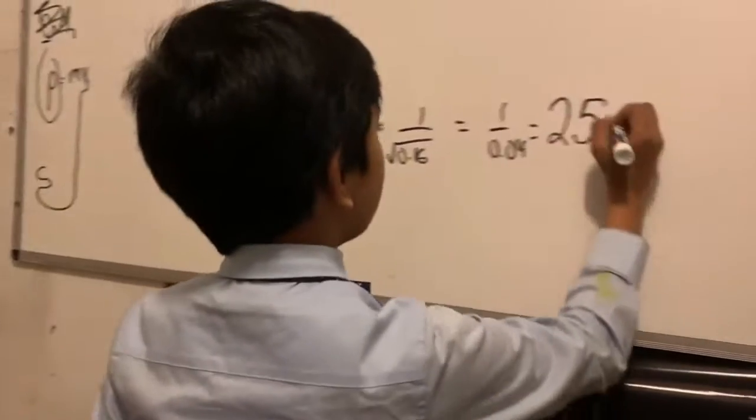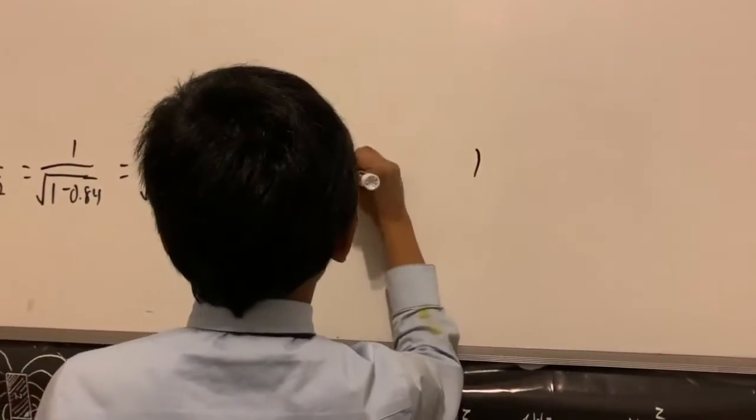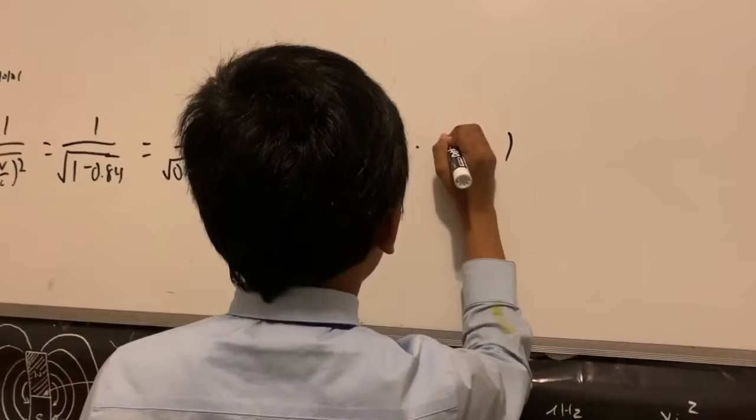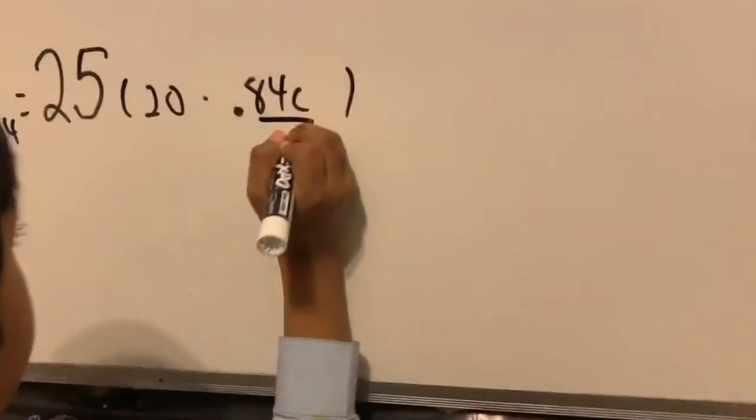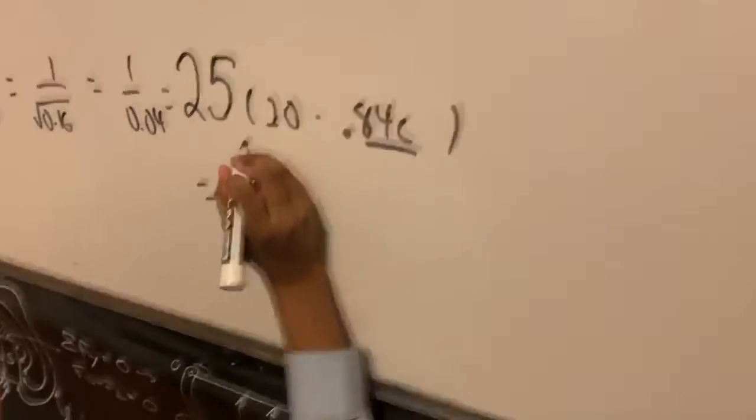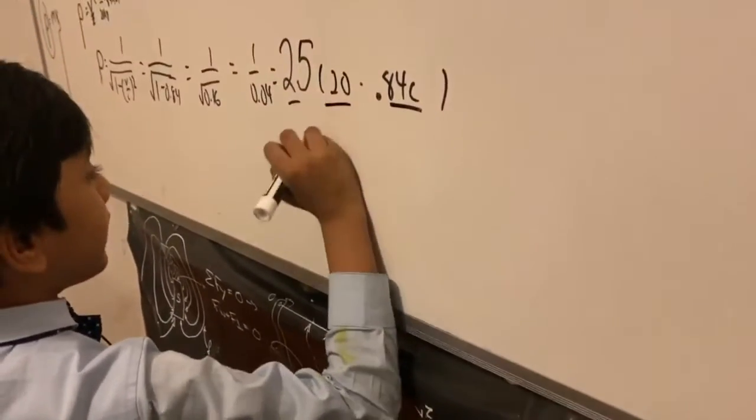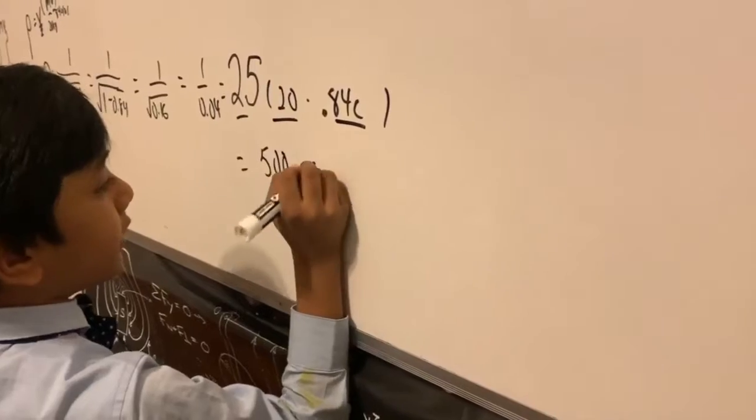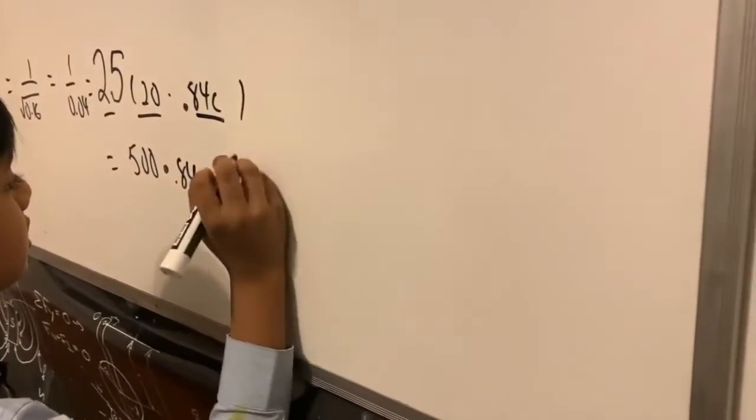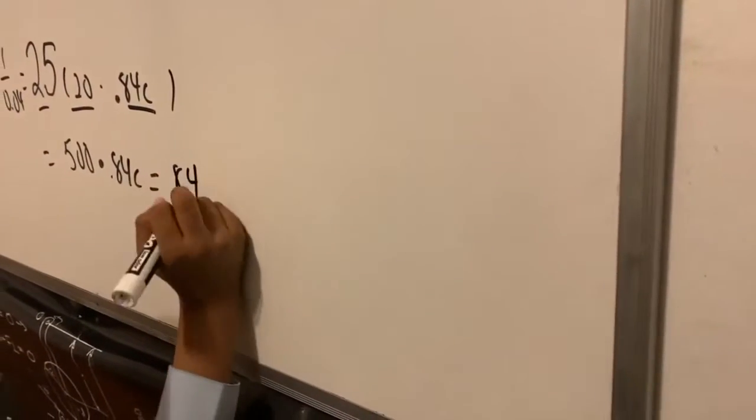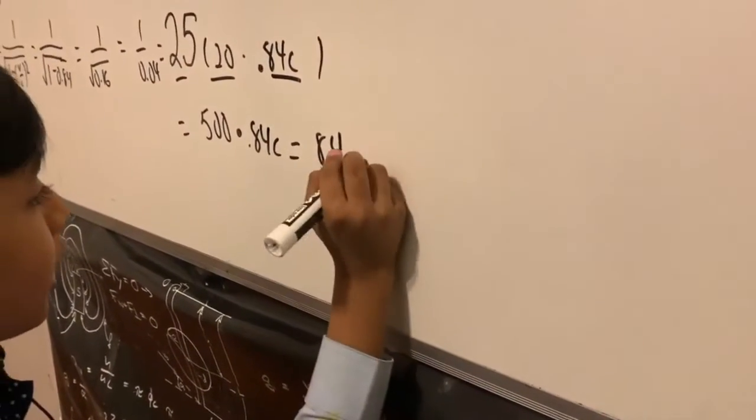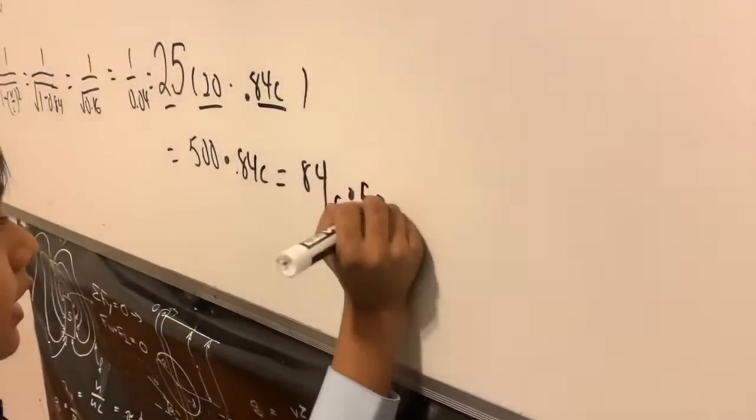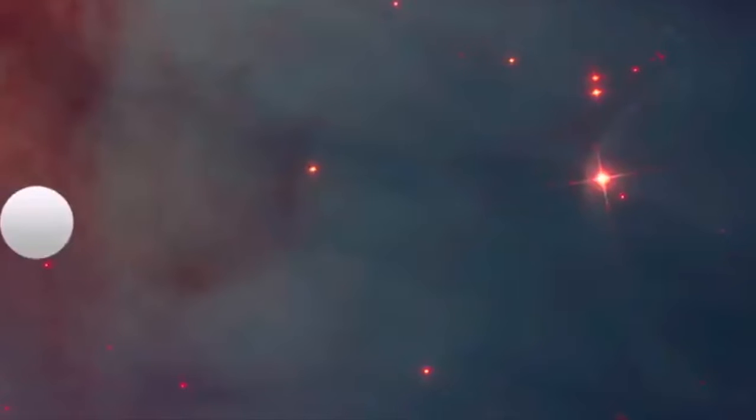But now we have to multiply it by the rest of the equation: 20 times 0.84c. Well this is pretty awkward but we can make it less awkward. By multiplying this by this we get 500 times 0.84c, giving us 84c. 84c times 0.5 is equal to 420c. Now that's obviously really high.